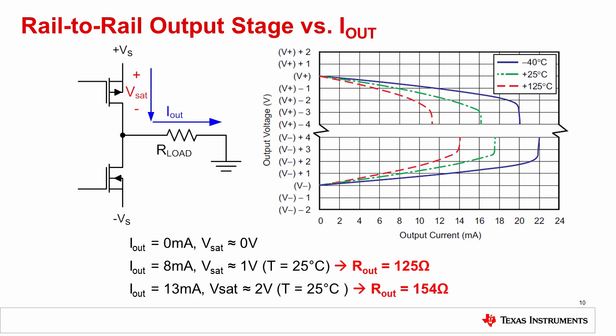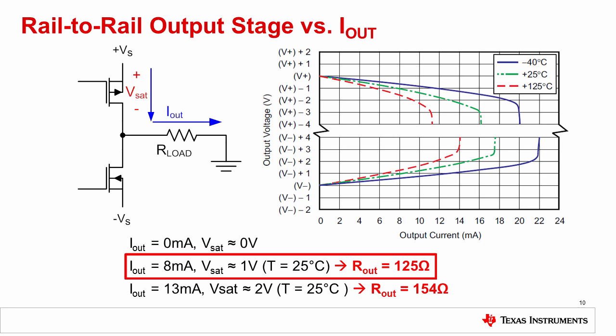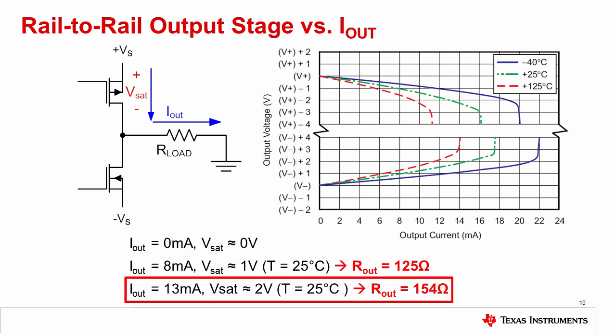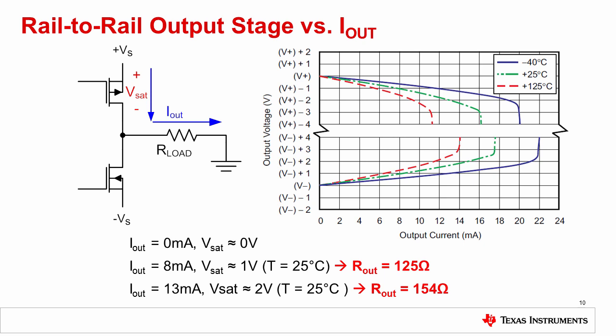The claw curve indicates a saturated output transistor condition. When a transistor is saturated, it acts as a resistance. For zero load current, very little current flows through the output transistor and the saturation voltage is near zero, though there is still some bias current so there will be a small voltage across it. For 8 milliamps of load current, the saturation voltage increases to 1 volt, giving a calculated resistance of 125 ohms. For 13 milliamps, the saturation voltage increases to 2 volts, giving about 154 ohms. The slight change in resistance is because short circuit protection is starting to turn on.